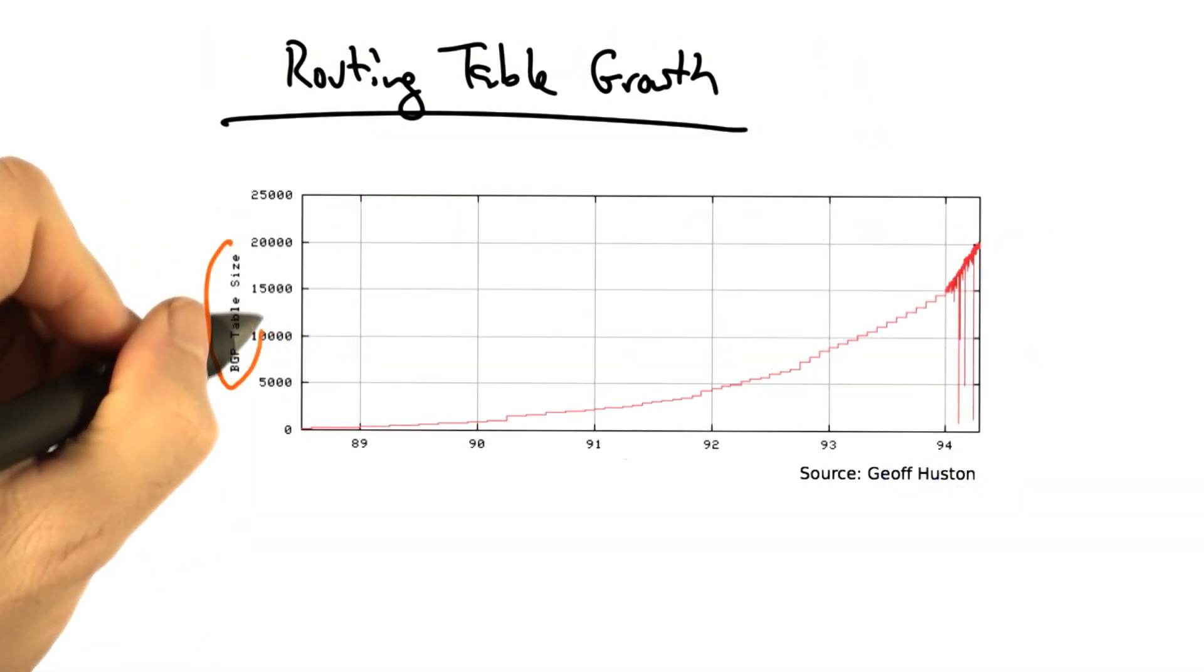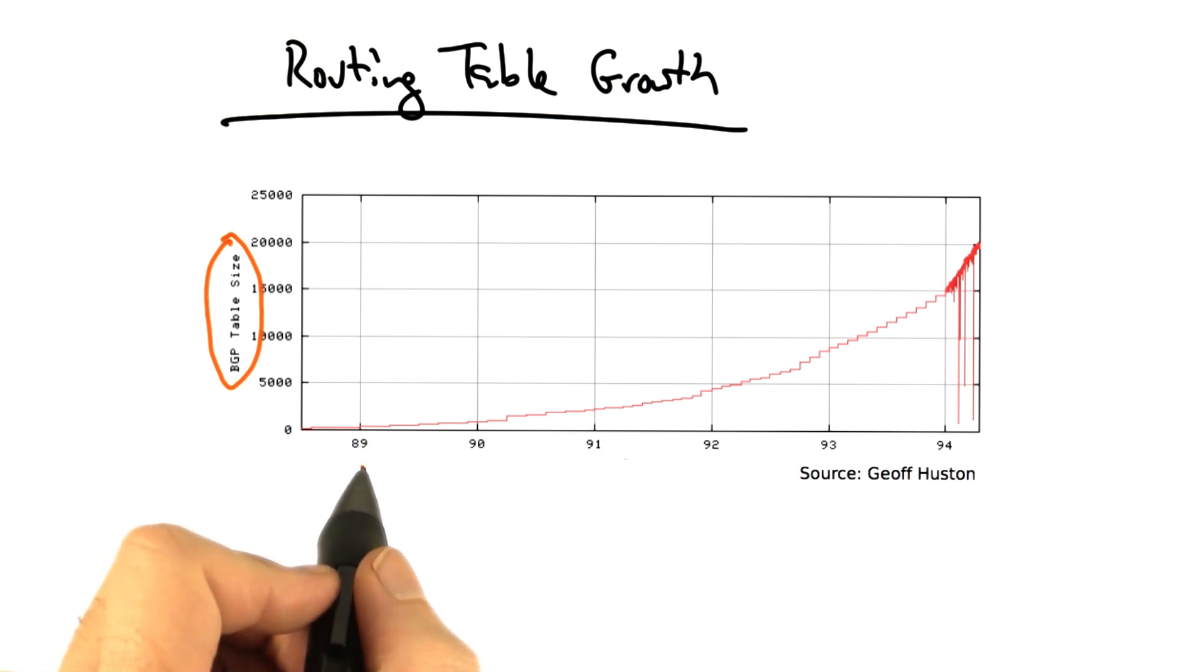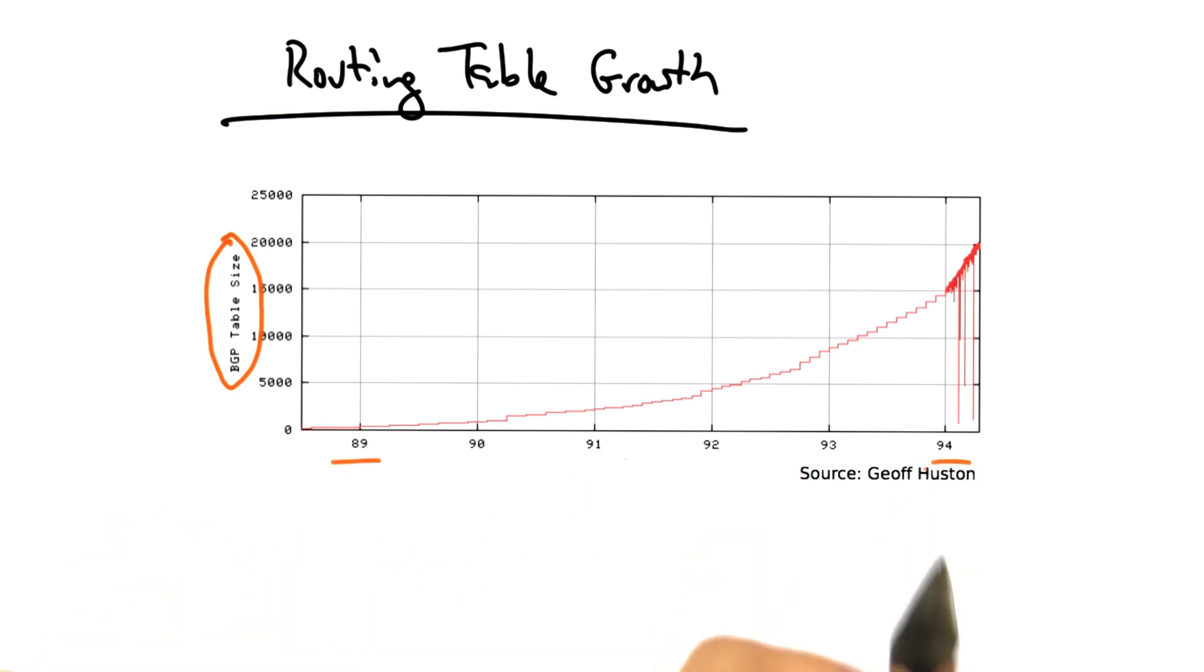This plot shows the BGP routing table size as a function of the year, starting in 1989 and going up to 1994. You can see that at this time, the Internet routing table is quite small. It started at less than 5,000 prefixes.